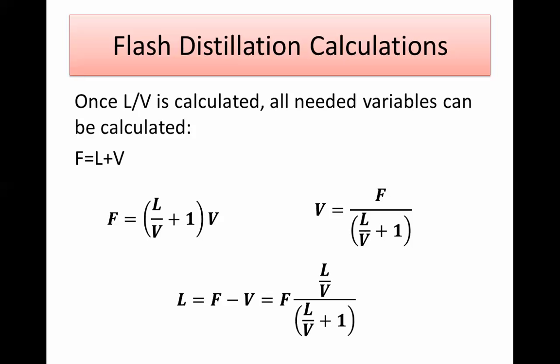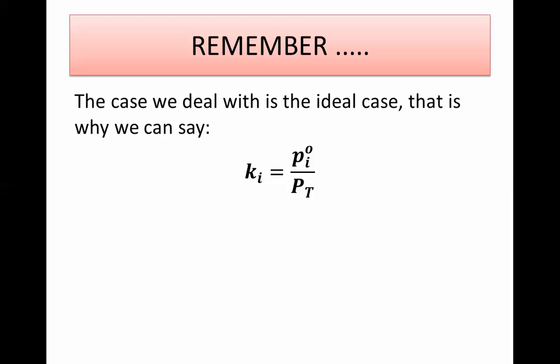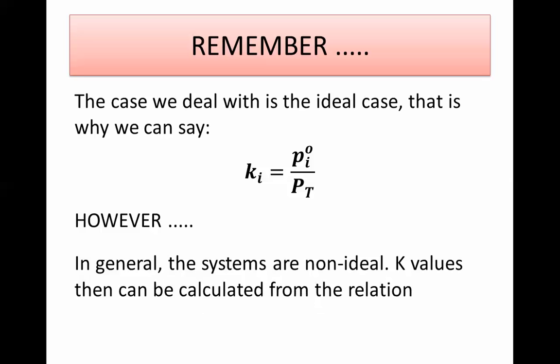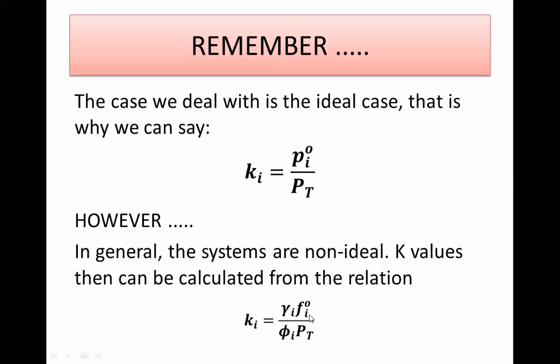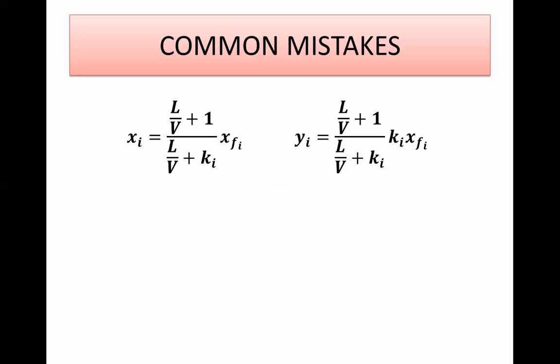One important note: we calculate K as vapor pressure over total pressure assuming an ideal case. For non-ideal systems, it becomes much more difficult — you'd need fugacity, activity coefficients, and other thermodynamic parameters. In that case, you might use a simulation tool like Aspen to get K values, or find charts for common hydrocarbon compounds used in separation processes. Make sure you do not use the ideal K formula if you have very high pressure or a non-ideal system.